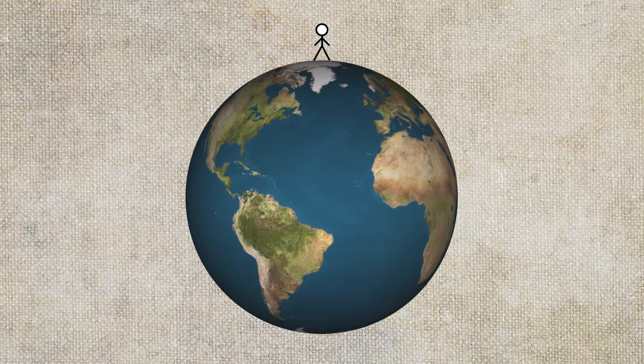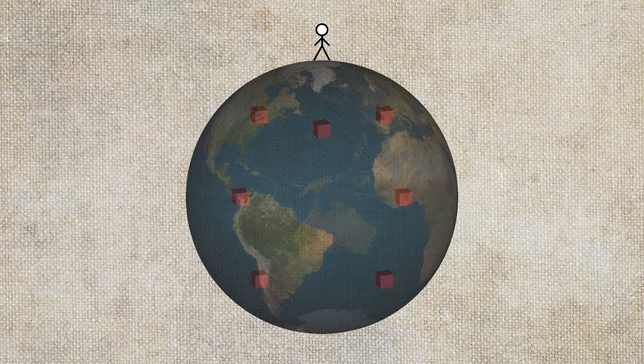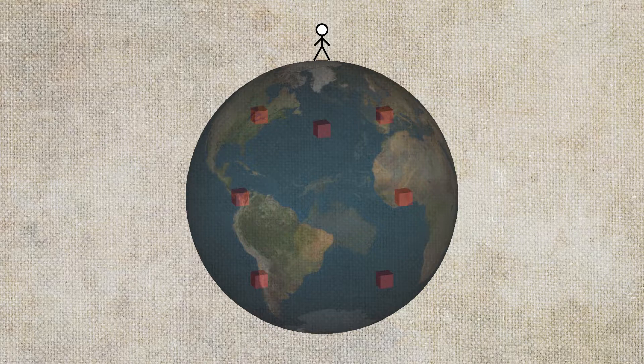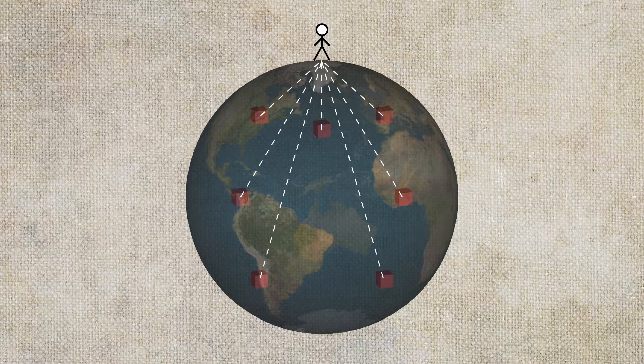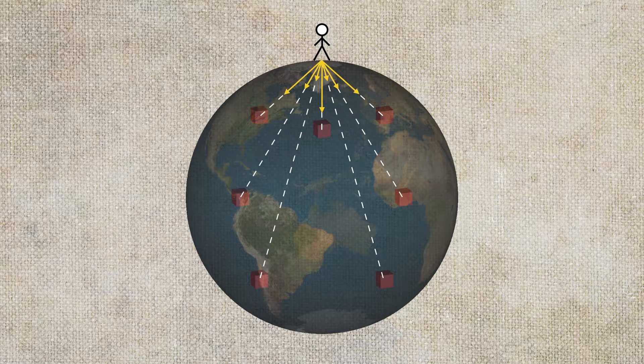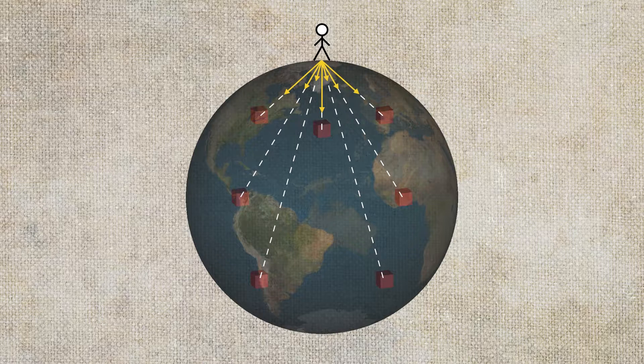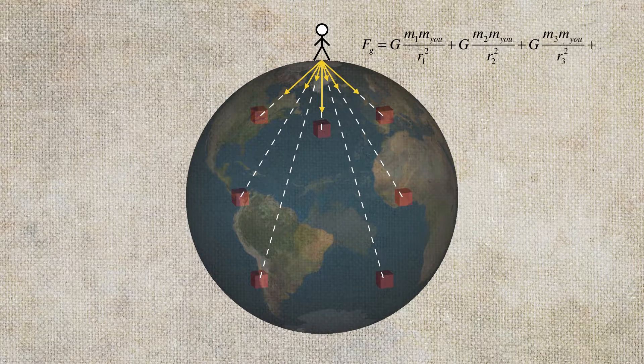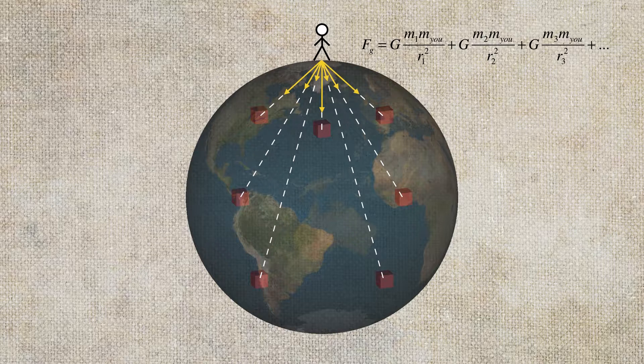But for Newton, understanding the gravitational force between you and Earth means understanding the gravitational force between you and every single chunk of the Earth. Earth, after all, is not a single point. So every chunk of the Earth is exerting some gravitational force on you. And since every chunk of the Earth is at a different distance from you, that means that the different chunks are going to exert different amounts of gravity. So if you really wanted to know what your weight was on Earth, you'd have to add up all of the individual gravitational forces that each and every chunk of the Earth is exerting on you. And that gets pretty tedious pretty quickly.